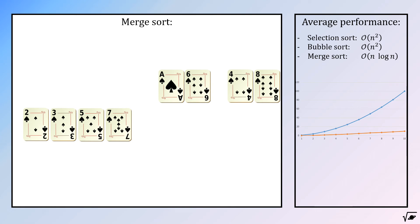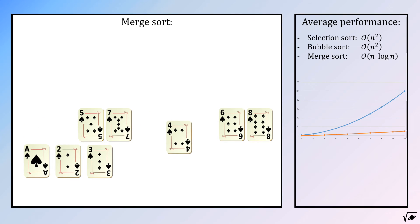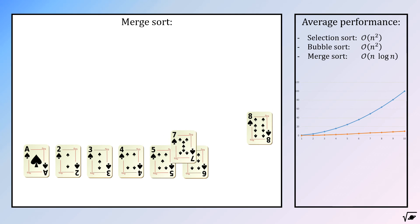This can also be done for the remaining 4 cards on the right hand side, also creating an ordered list of 4 cards. As a final iteration, these two lists can now be merged into 1 as well.